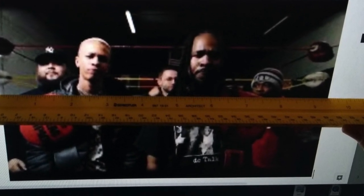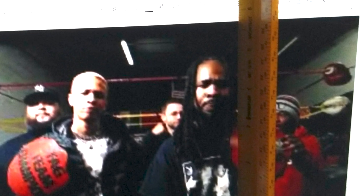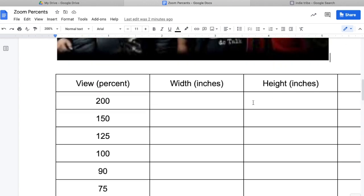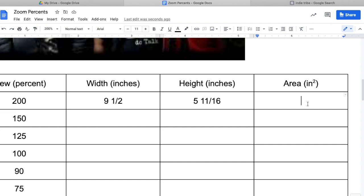Width is about nine - looks like it's almost exactly nine and a half inches. And the height is five and eleven-sixteenths inches. So I'm going to put them in my chart. My width was nine and a half inches, and my height was five and eleven-sixteenths inches.